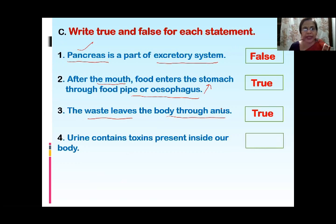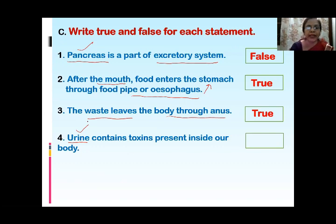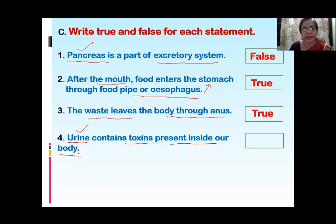Next question: Urine contains toxins present inside our body. Urine is formed inside the kidneys and it is a harmful substance — it should not be accumulated in our body for a long duration, as it is toxic for our body. So the statement that urine contains toxins is true.